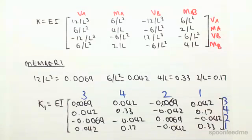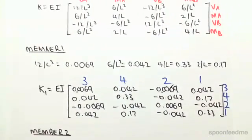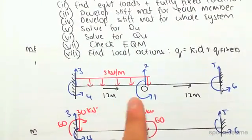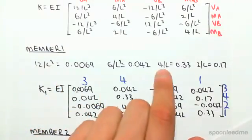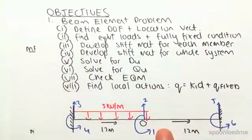Hey guys, we're continuing straight on from the previous video. We've now developed the stiffness matrix for member one. We need to develop the stiffness matrix for member two, but you'll notice this is actually symmetrical - it's 12 meters there and 12 meters there, which means our 12 on l cubed, 6 on l squared, 4 on l, and 2 on l are going to be identical for member two.